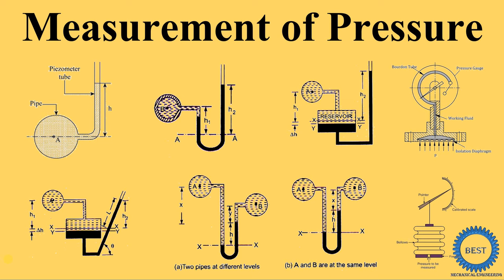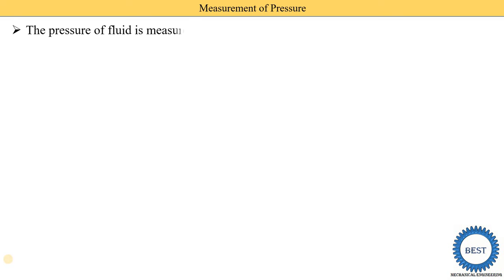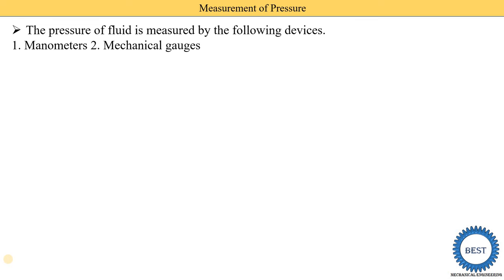In this video we discuss the classification of pressure measurement devices. Pressure measurement devices are used to measure the pressure of any liquid or gas. There are two main types: the first is called the manometer, and the second is the mechanical gauge.